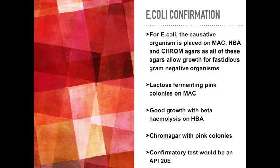For E. coli, the causative organism is plated on MacConkey agar, horse blood agar, and chromogenic agar, as all of these agars allow growth for fastidious gram-negative organisms. Once incubated, results from the agar should show lactose-fermenting pink colonies on the MacConkey agar, good growth with beta-haemolysis on the horse blood agar. The chromogenic agar would be used as an additional plate to confirm the growth of E. coli, resulting in pink colonies. A confirmatory test would be the API 20E to validate that the causative agent of the UTI is E. coli.